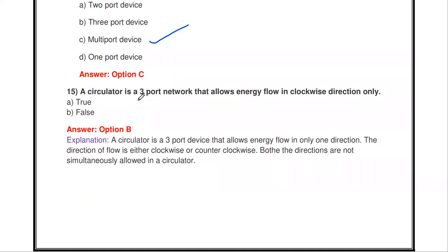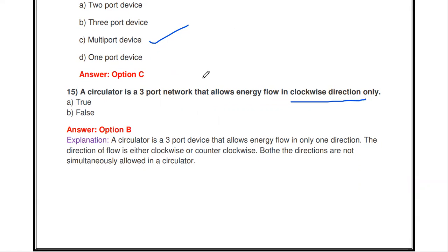The next question: a circulator is a three-port network that allows energy flow in clockwise direction only — true or false? This is false. There is also a two-port circulator. It allows energy flow either in clockwise or anti-clockwise direction. A clockwise circulator transfers energy clockwise, and an anti-clockwise circulator transfers energy anti-clockwise. So the statement is false — the direction depends on the circulator type.